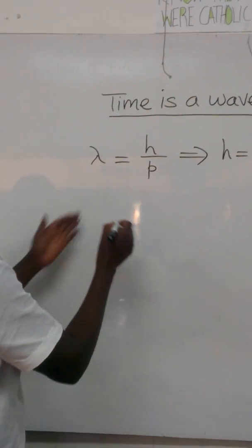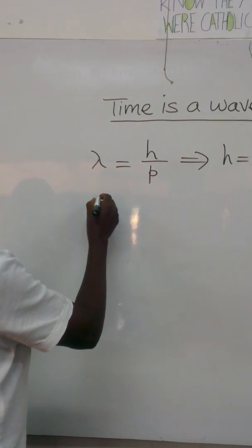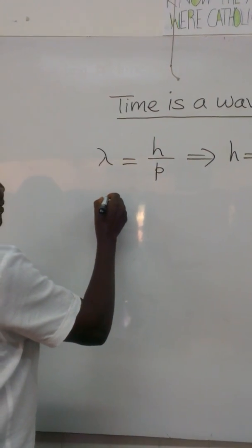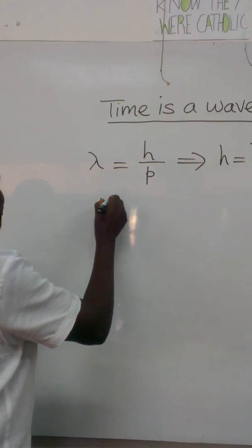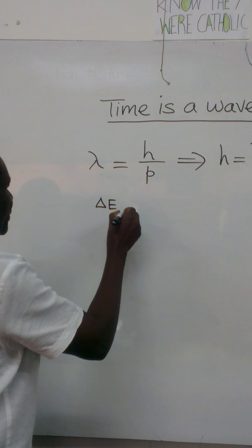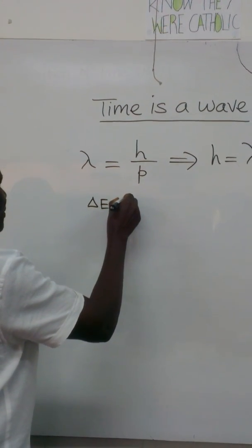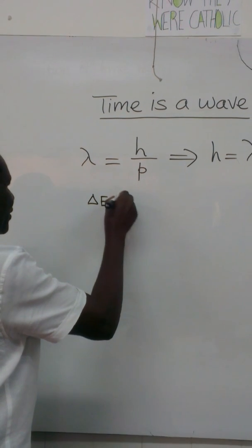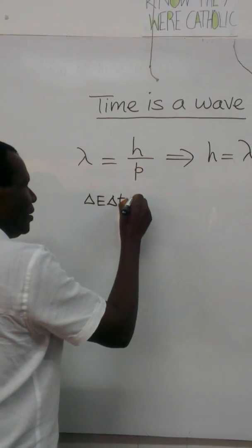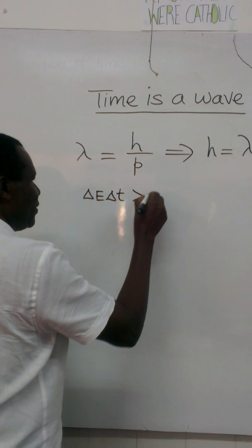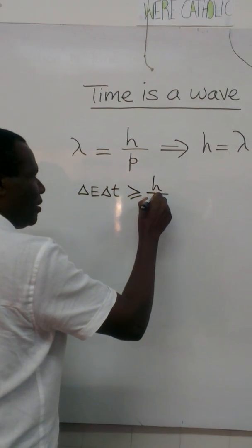According to Heisenberg's uncertainty principle, the change in energy times the uncertainty in time is always greater than or equal to h over 4pi.